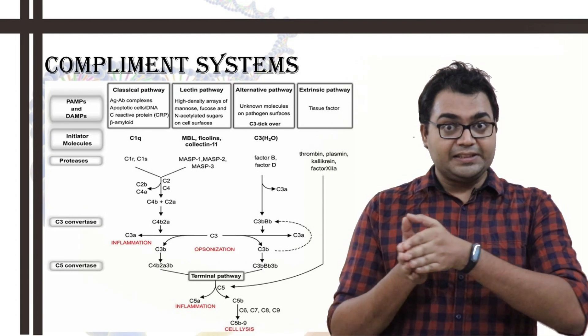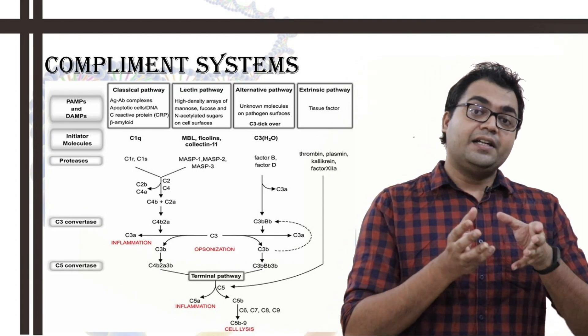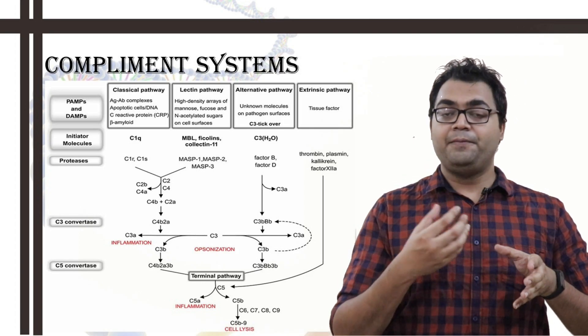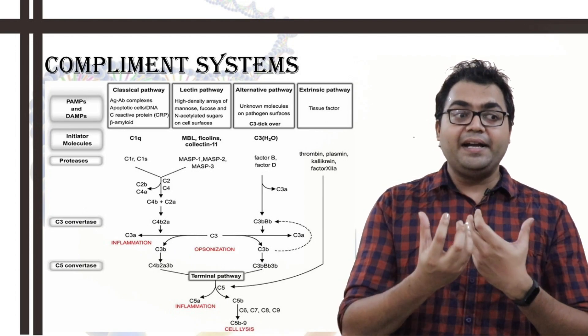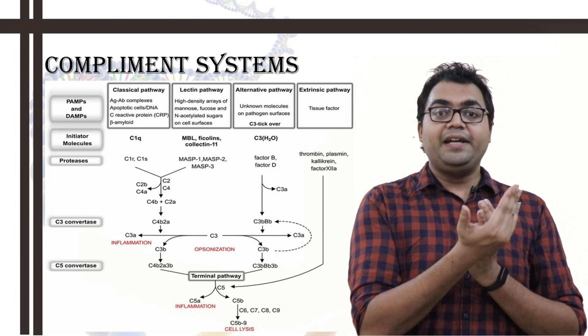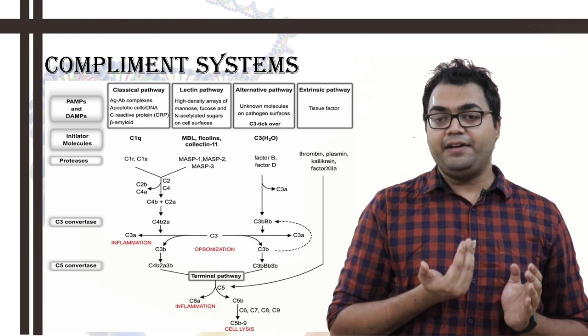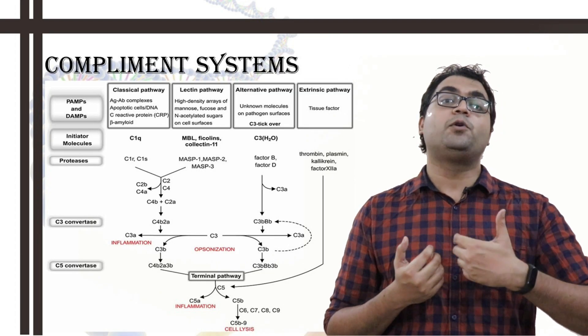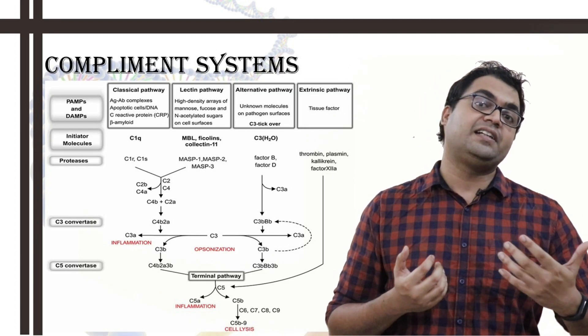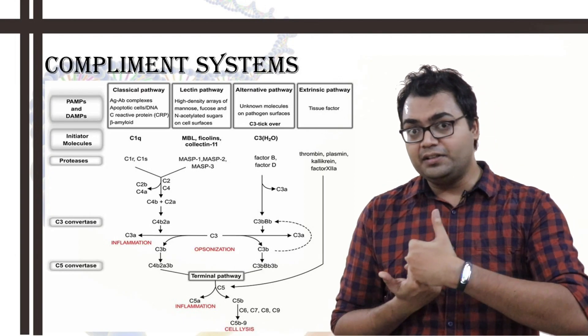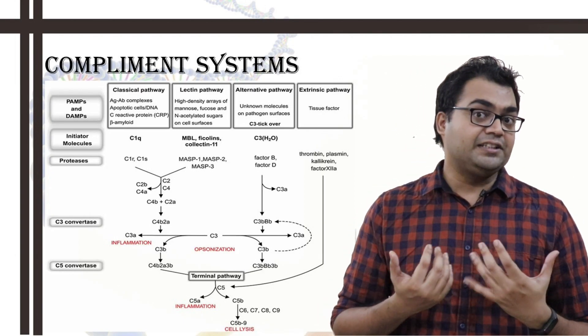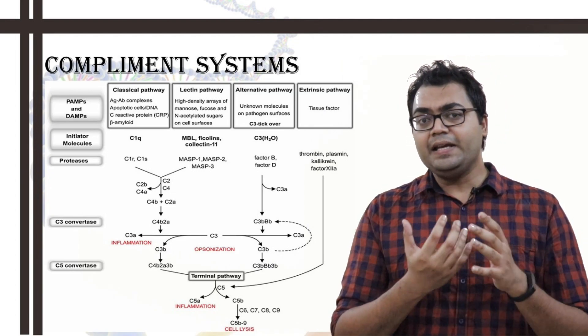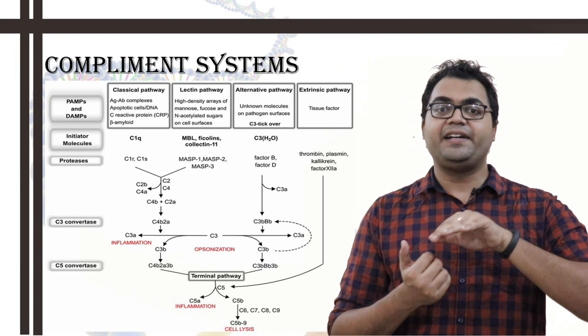Which can then break down C5 into C5a and C5b. Again, C5b is an opsonin, C5a is an anaphylatoxin. Now, this anaphylatoxin-mediated method can carry on, can bind to the C3a receptors or C5a receptors. Most of them are, again, G-protein coupled receptors present on the neutrophils and other leukocytes, which will recruit the leukocytes, especially the neutrophils, and cause degranulation, and then causes the pro-inflammatory cascade.